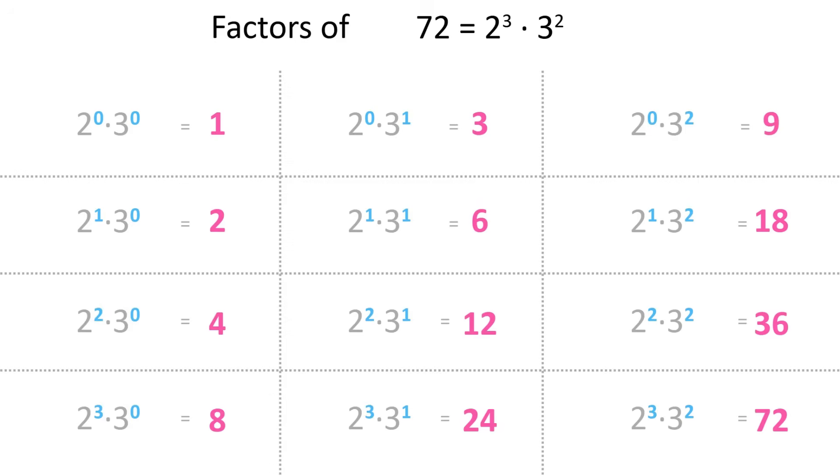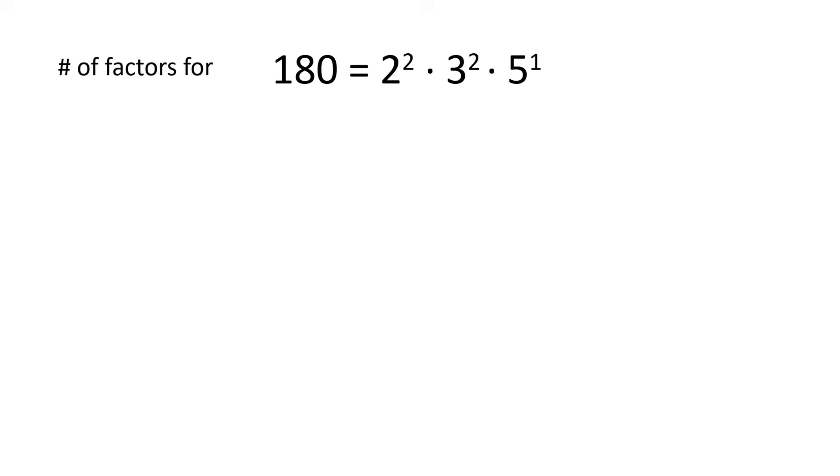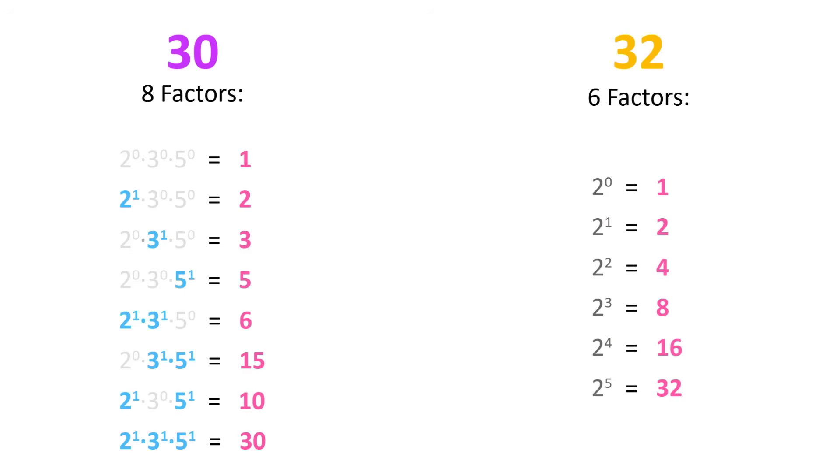Finding all the factors is easy if you have the prime factorization. You just have to change the exponents above the primes, where each one ranges from zero to whatever it is in the original number. Every combination gives you a unique factor, so to find the number of them, you just take the original exponents, add one to each of them, and multiply them together. With this process, we can see that 32 has six total factors, and 30 has eight.